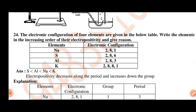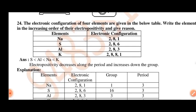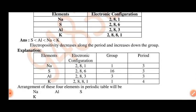The electronic configuration of four elements are given in the below table. Write the elements in the increasing order of their electropositivity and give reasons. Now we will be able to answer the question.